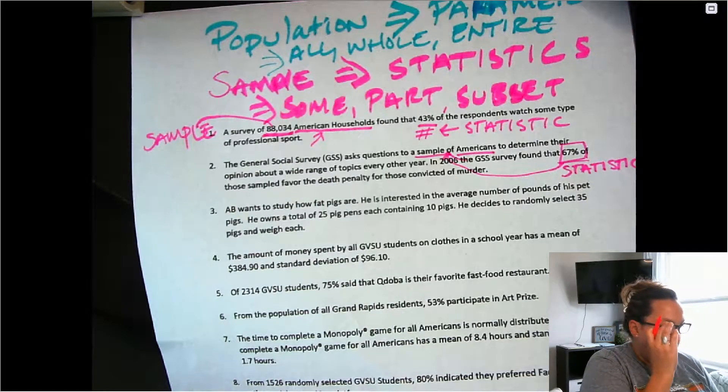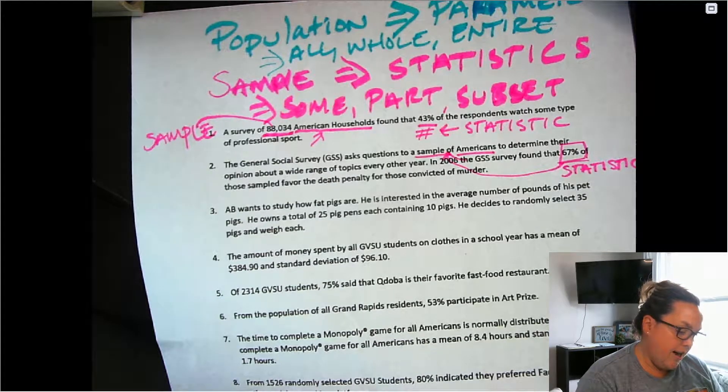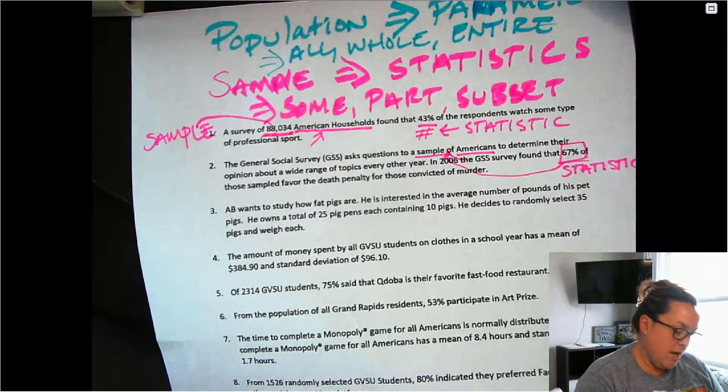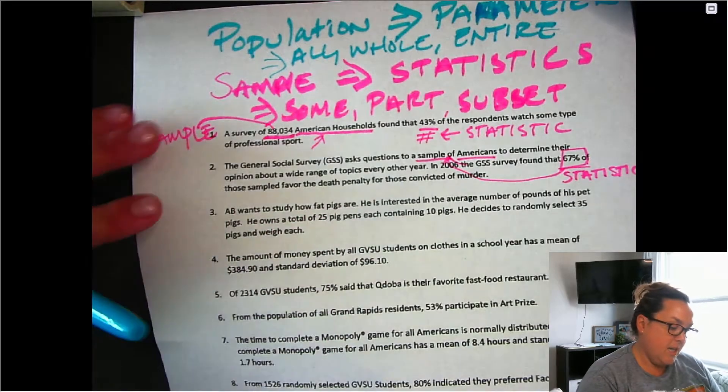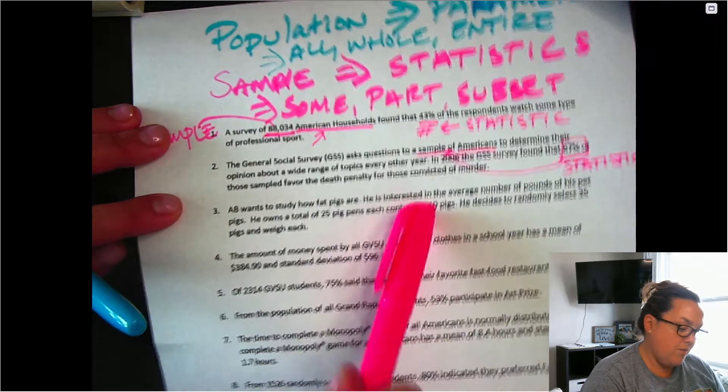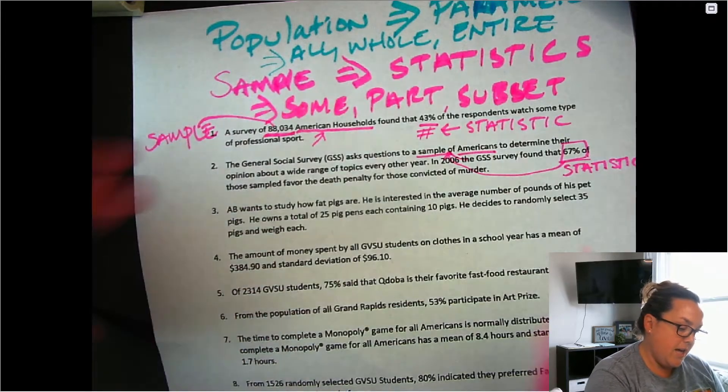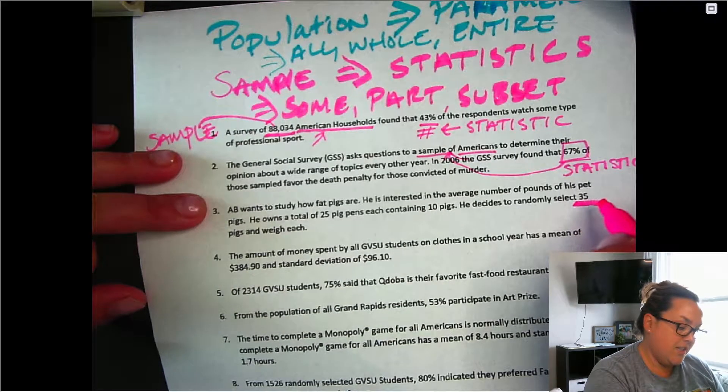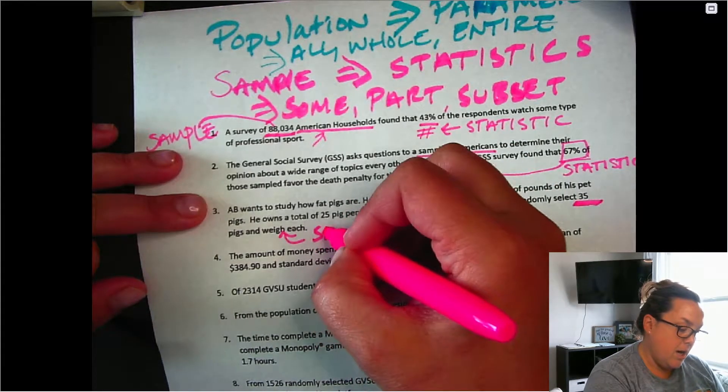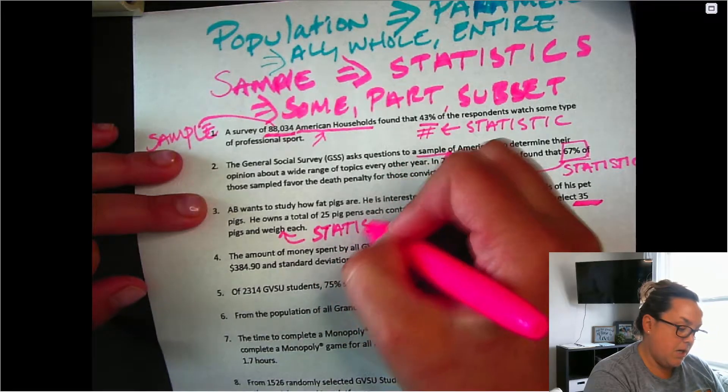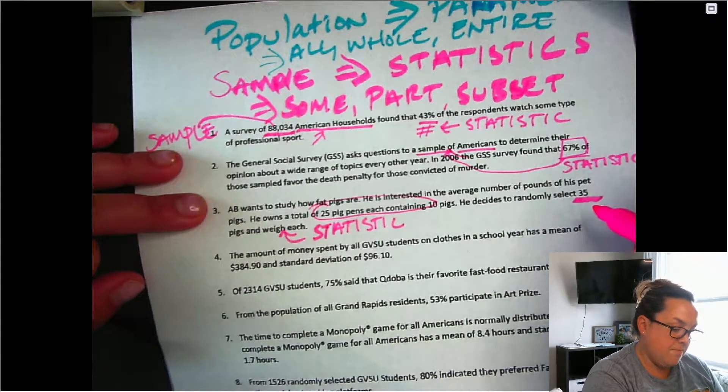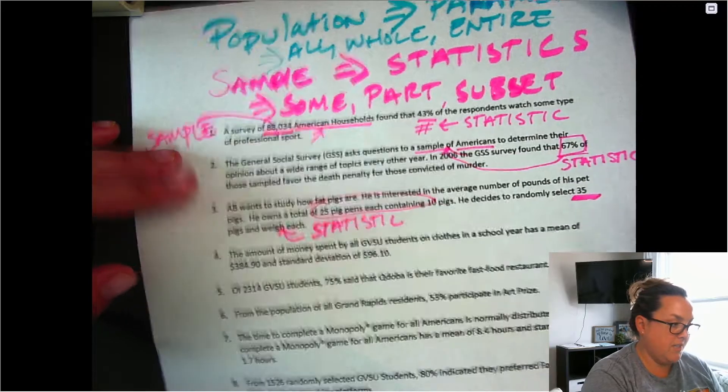Next, if we have AB and how fat his pigs are, the average number of pounds is what he's going to be measuring. He has a total of 25 pens and 10 pigs in each pen. And so that means that the total would be 250. He randomly selects 35. So that number is smaller. So the weight for those 35 pigs is going to be a statistic because this 35 is smaller than the total of the 250. So that number would refer to the sample and therefore it's a statistic.